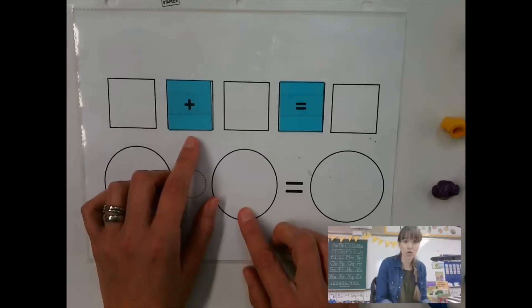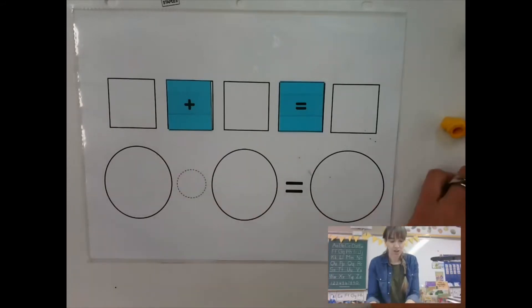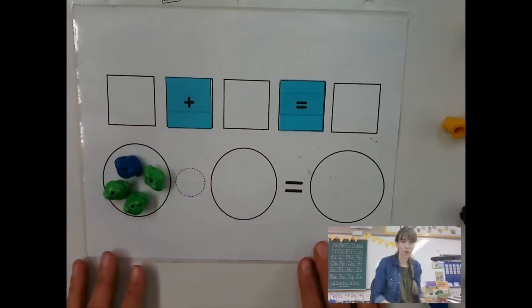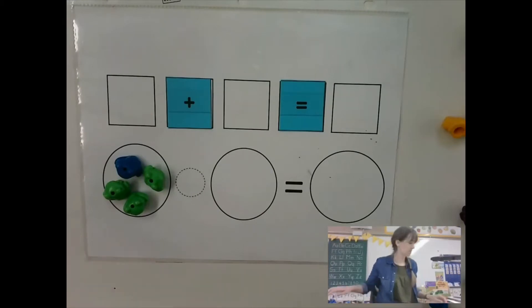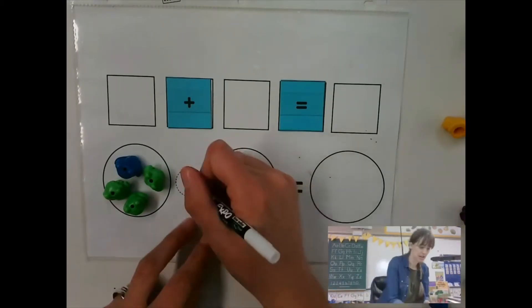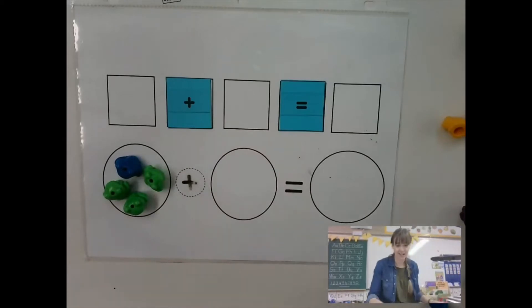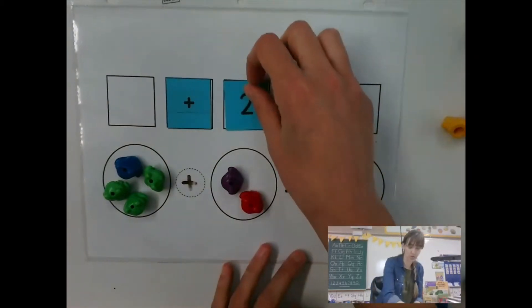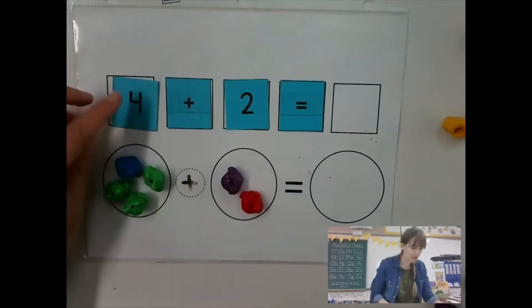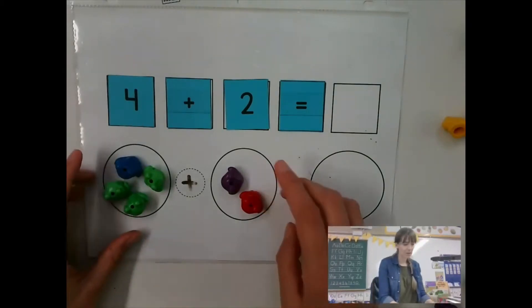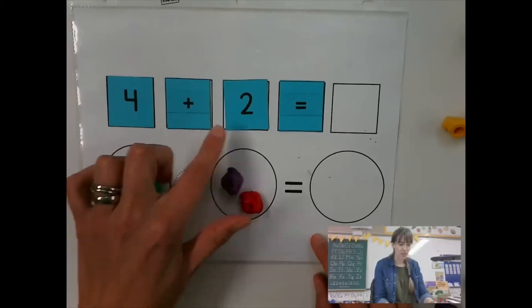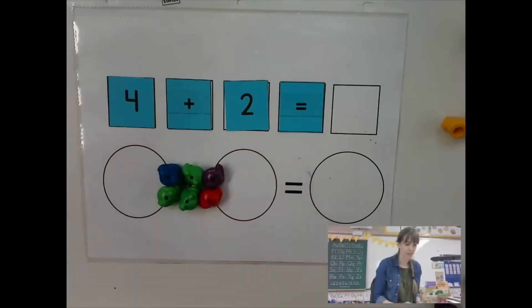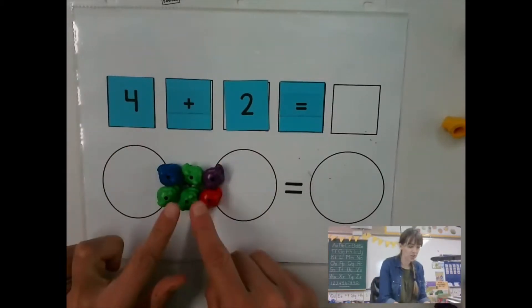So if I were to have four here and I were to add two to that — I have a two and I have a four. What that means is I'm going to take my four and add to it the two. I'm going to take my two groups and put them together. Four and two make six.